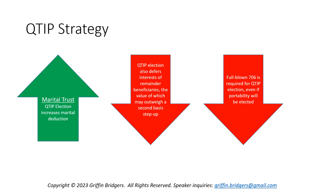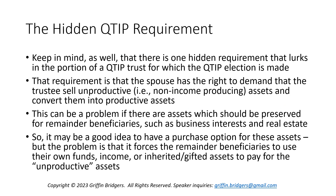Keeping that in mind, we have another trade-off here where, in addition to deferring remainder beneficiaries' interests, we also have the cost, time, and effort of preparing a full-blown 706 for that Q-tip election, even if we're going to make the portability election at the end of the day. That can be very costly, could take a lot of time, and could require some appraisals of illiquid assets. Speaking of illiquid assets, there's another hidden Q-tip requirement that is tax-related and tends to fly under the radar, which can totally blow up the plan in terms of the business and interest mix when we look at the assets.